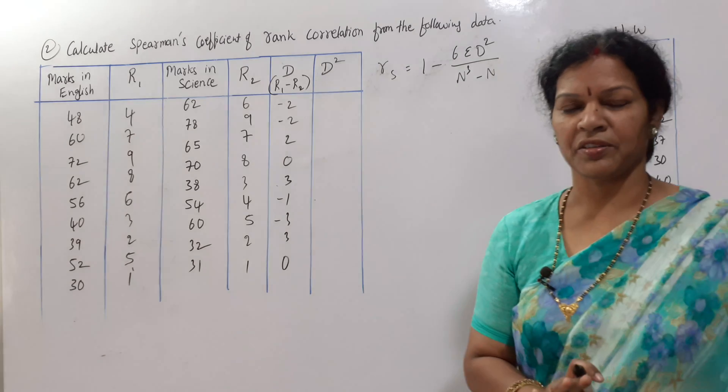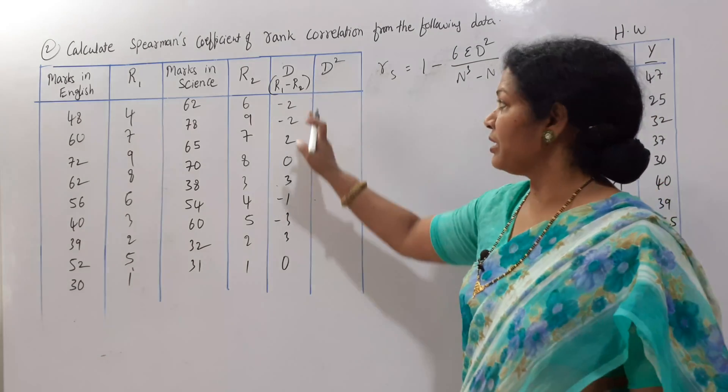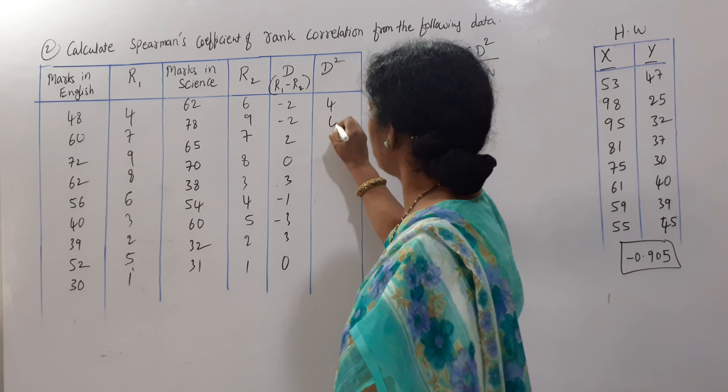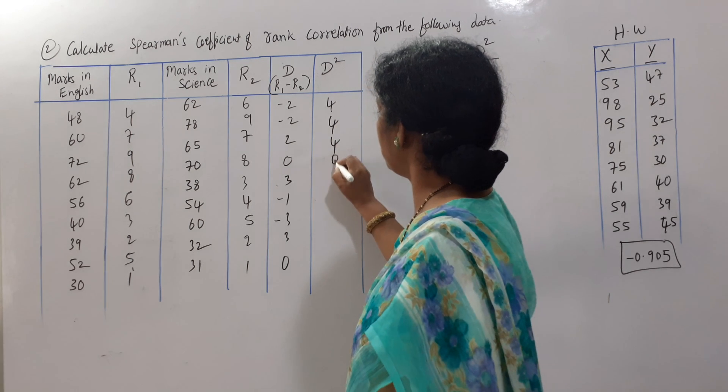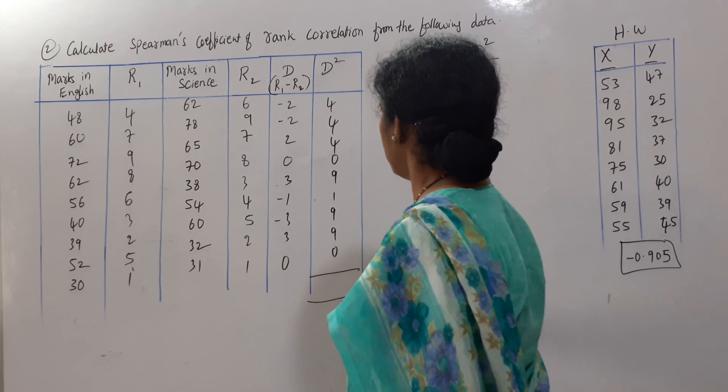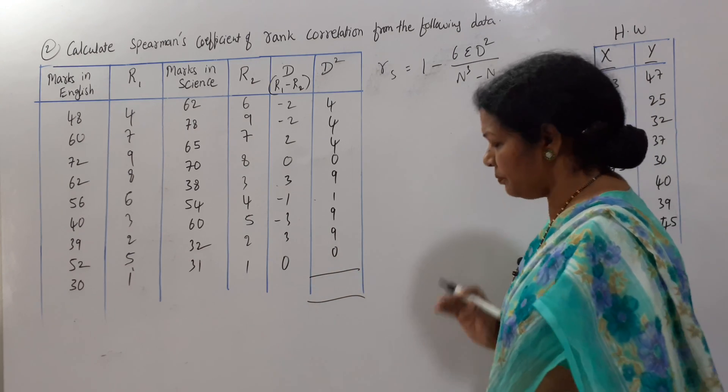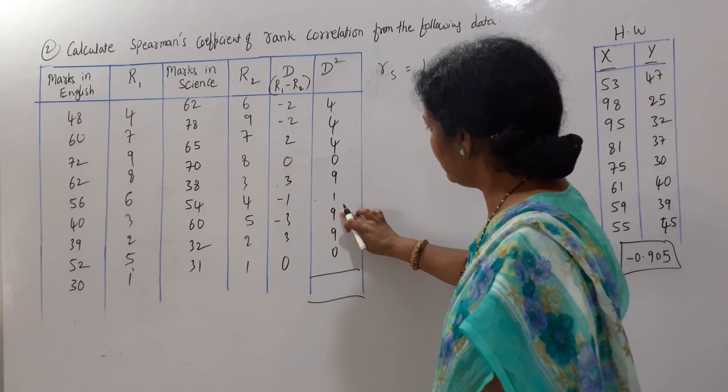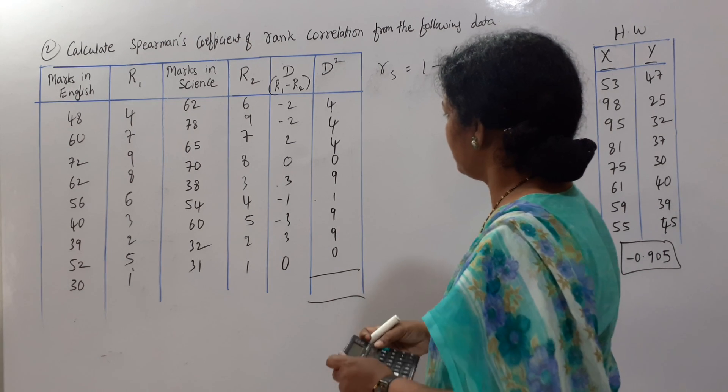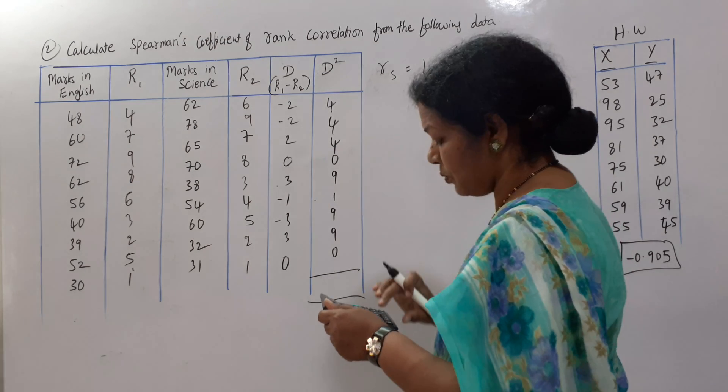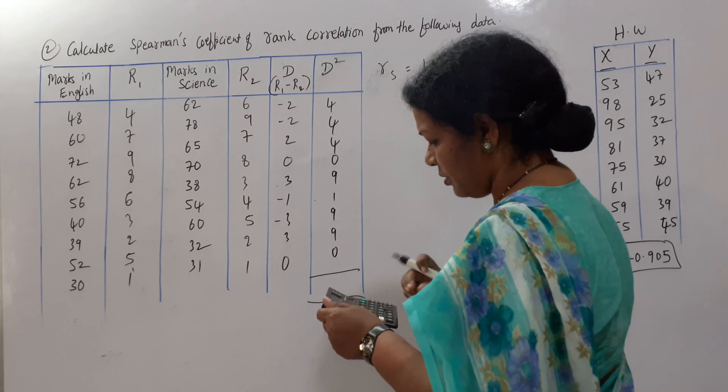So, like we have given ranks, sorry, D we have taken, this is D square we want to do. 4, 4, 4, 0, 9, 1, 9, 9, 0. So, total, 10, 19, 9, this is 12, it is coming to 40.